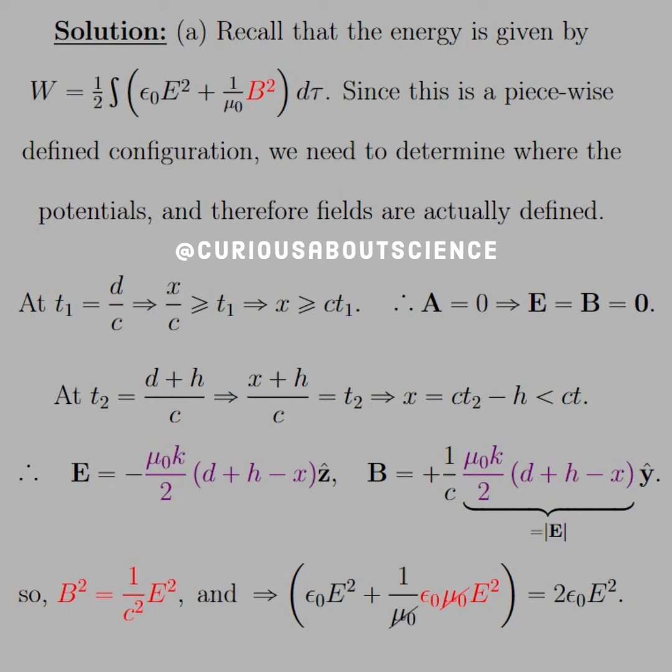So, at T1, we have, we were told in the question statement that that was D over C. So, if we know what some distance is, and we put the variable time in there, we want X over C is greater than or equal to T1 in order to exist. So, we need X greater than CT1. Therefore, A equals 0, and E and B are 0. At T2, when we have the plus there, and we have X put in there, we can see that X needs to be CT2 minus H is less than CT, and that's where we can be.